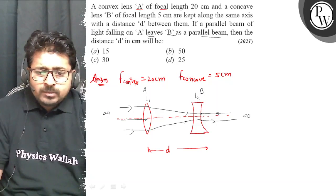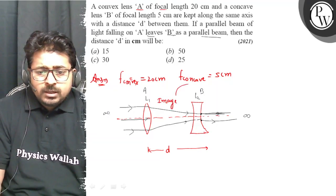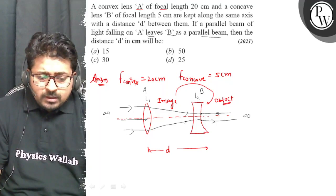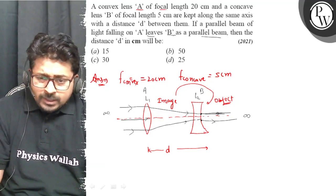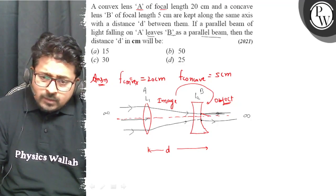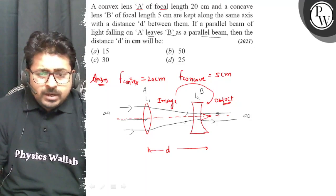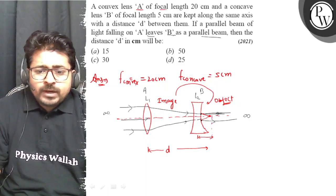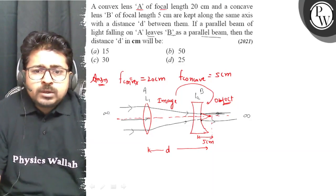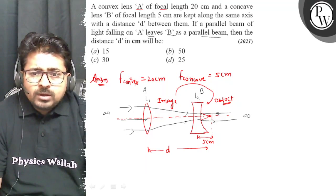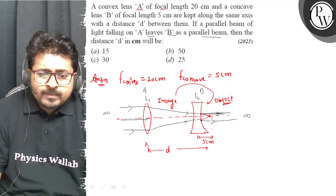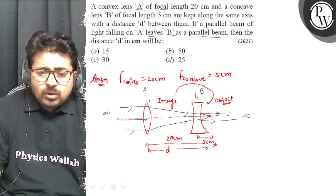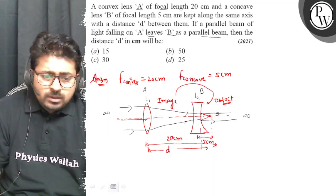For the outgoing beam from B to be parallel, the object for the concave lens must be at its focus. Parallel rays from infinity focus at the focal point, so the image from the convex lens must fall at the focal point of the concave lens, which is 5 cm from it. The focal length of A is 20 cm, so the distance from A to the focus is 20 cm.